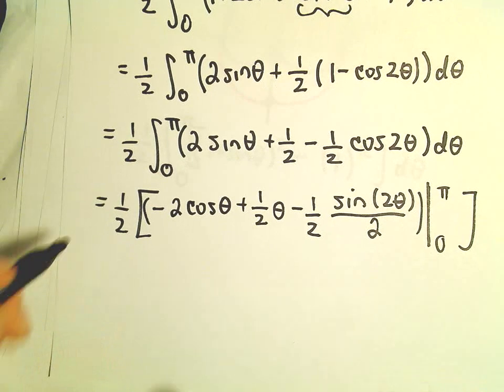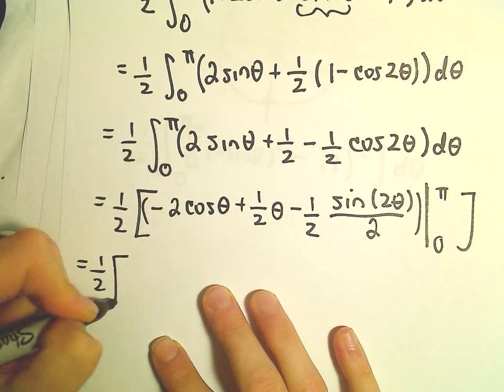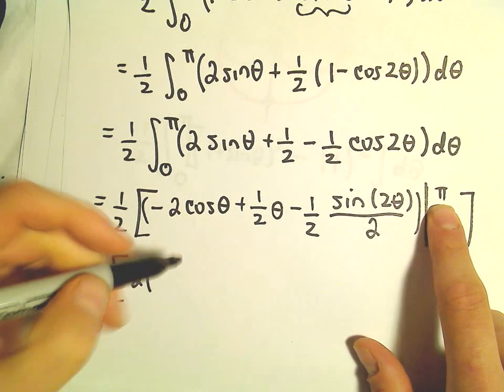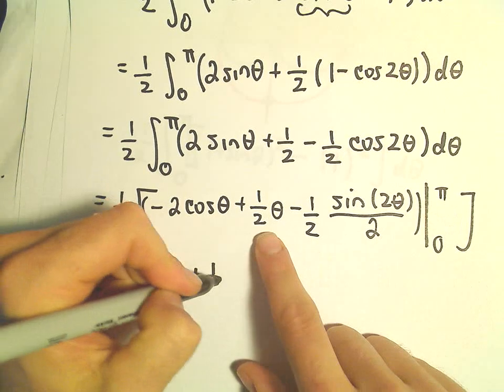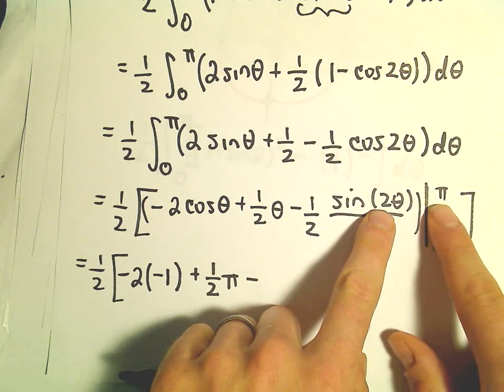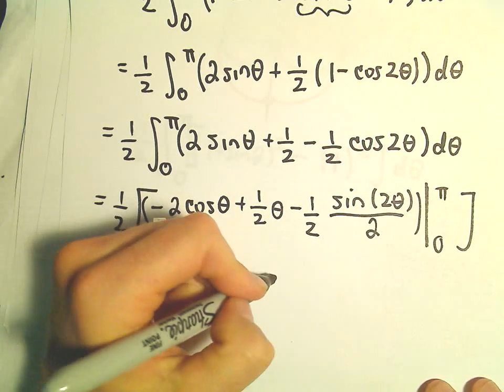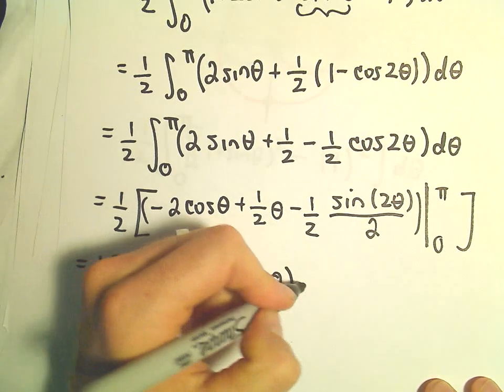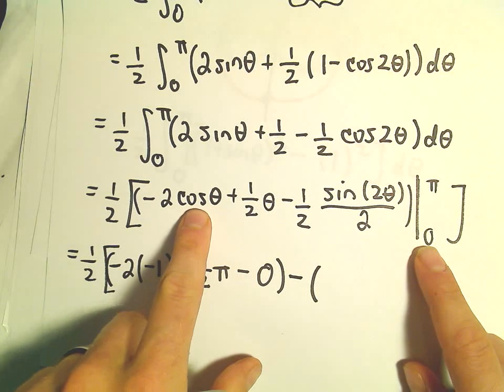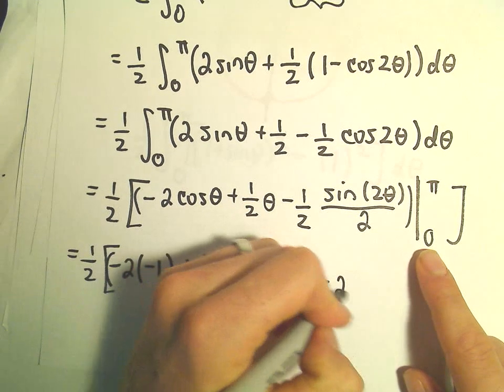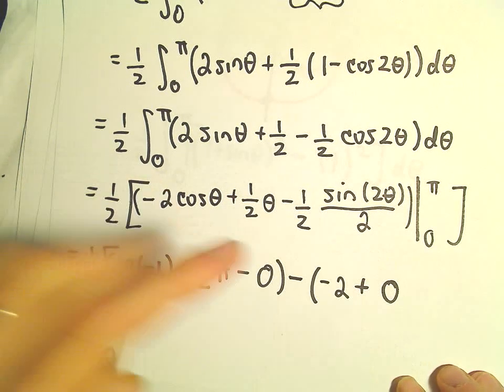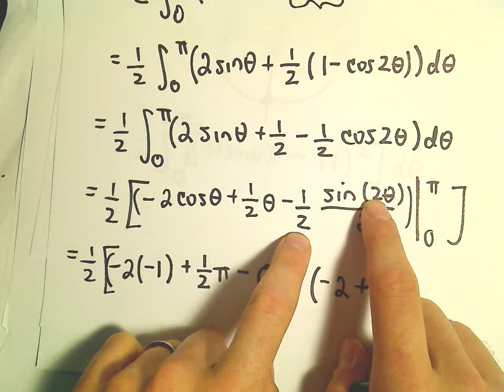So let's see if we can start plugging everything in here. We would have cosine of pi. Cosine of pi is going to be negative 1. We'll have 1 half times pi. But notice we'll have sine of 2 pi. Sine of 2 pi is 0. So all of that will turn into a 0. So that's going to be our upper limit. Minus when we plug in our lower limit, cosine of 0 is going to be 1. So we'll be left with negative 2. We'll have plus 1 half times 0. So that will be a 0. And then we're going to get sine of 0, which is 0.